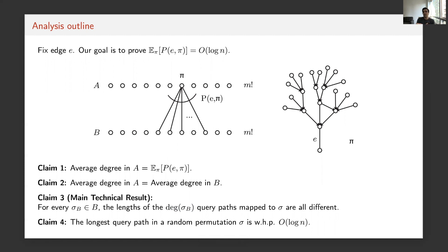From this, we derive the main bound: fixing any edge e, the total number of queries to that edge under a random permutation is O(log N). Summing over all m edges, the total query complexity across all starting vertices is O(m log N). Dividing by N — since we pick a random starting vertex — the query complexity per vertex is O(m/N × log N) = O(D-bar × log N). This is the main claim of the paper.